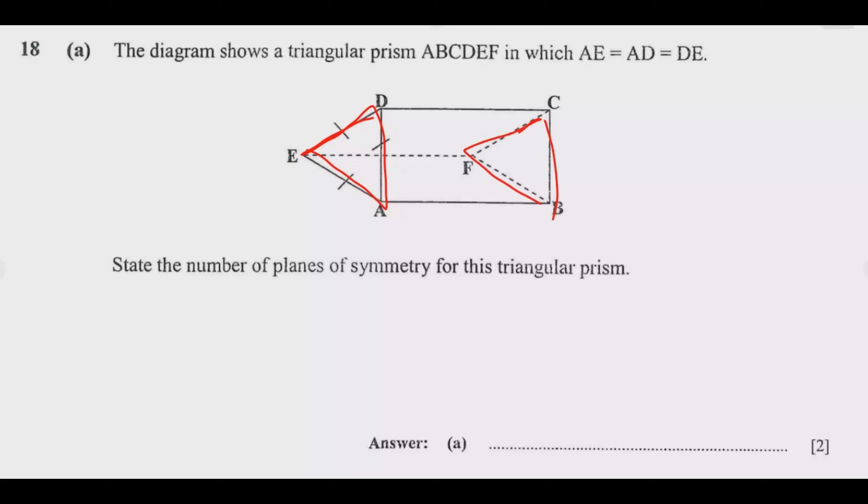The first one cuts at the middle, somewhere in the middle of this line. Once you cut at the middle such that this distance and this distance are equal, this is the first plane of symmetry because what is on this side and what is on this side will be identical.